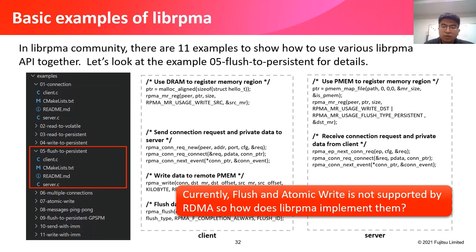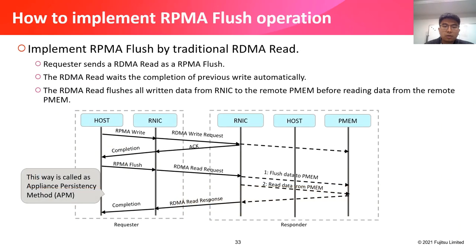Currently, flush and atomic write are not supported natively by RDMA, so how does librpma implement them? librpma implements rpma_flush by traditional RDMA read. The requester sends an RDMA read as an rpma_flush — the RDMA read automatically waits for completion of previous writes, and flushes all written data from the RNIC to remote P-memory before reading the data. This approach is called the Applied Persistency Method (APM).